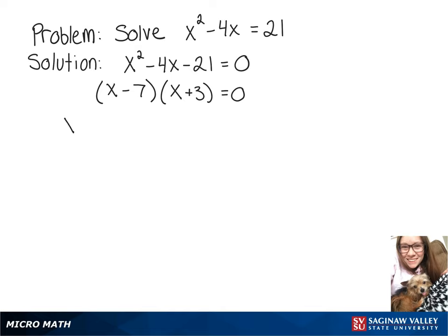So our answers are going to be x minus 7 equals 0, or we could solve x plus 3 equals 0.